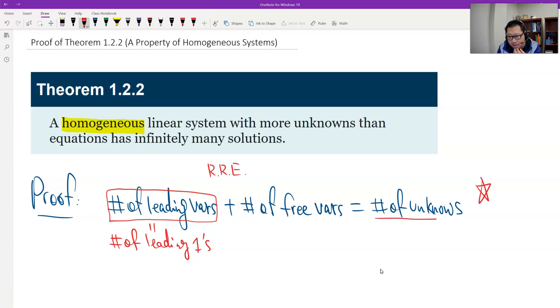And then the number of unknowns. So we see, first it says the system has more unknowns than the equation. This is more, it means greater than the number of equations.